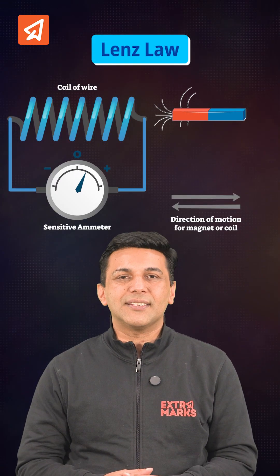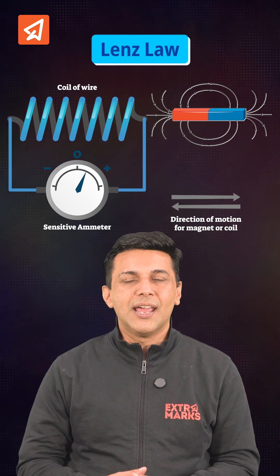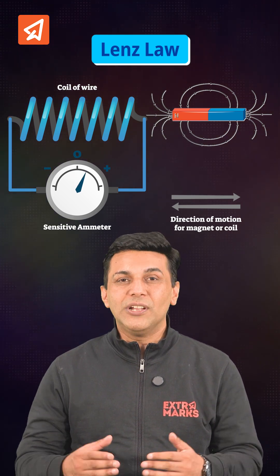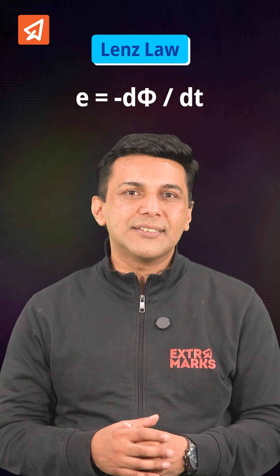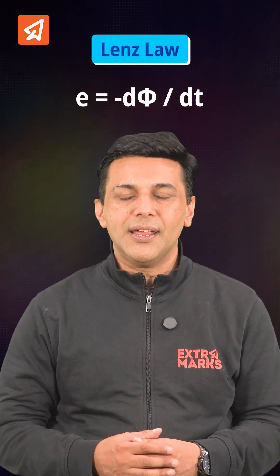According to Lenz's Law, whenever the magnetic flux associated with the coil changes, an EMF is induced in it which tries to undo the change. This is expressed as E = -dΦ/dt, where the negative sign represents Lenz's Law.